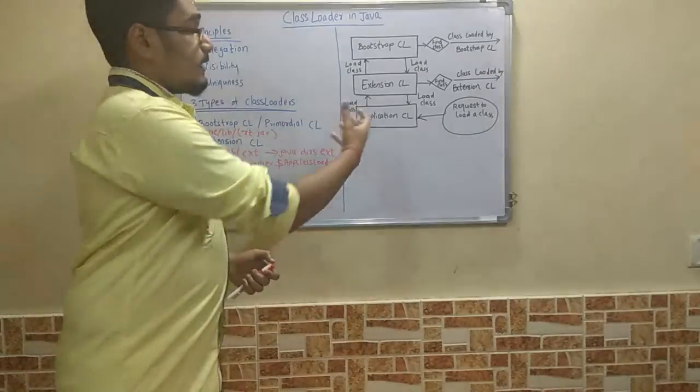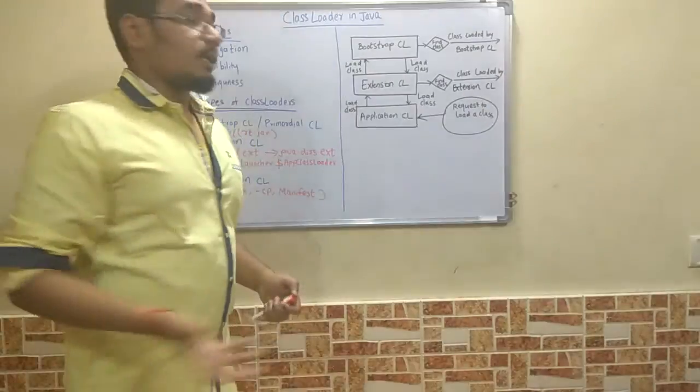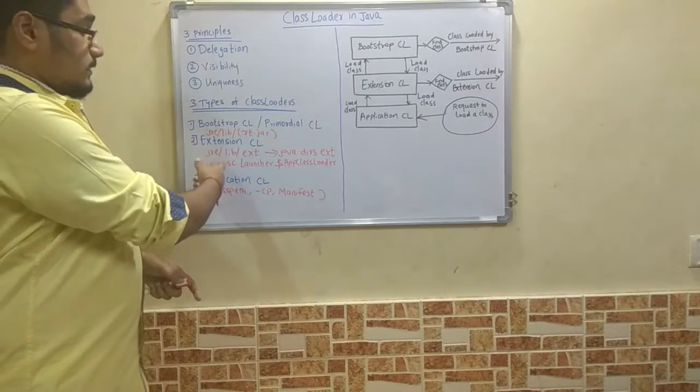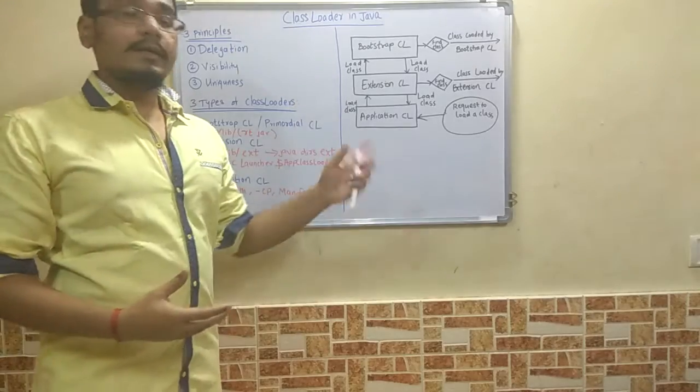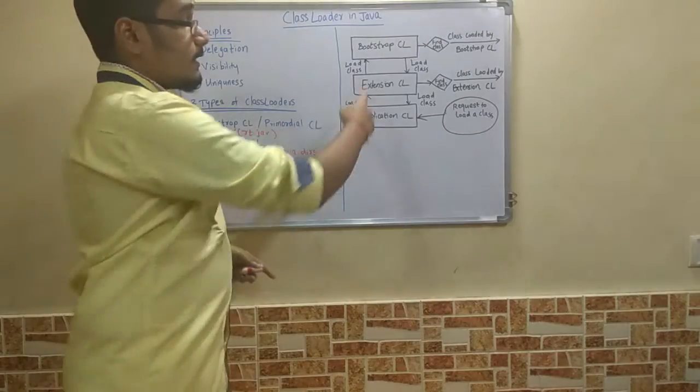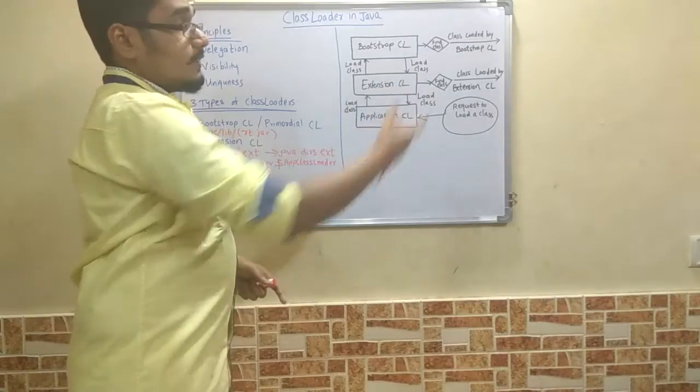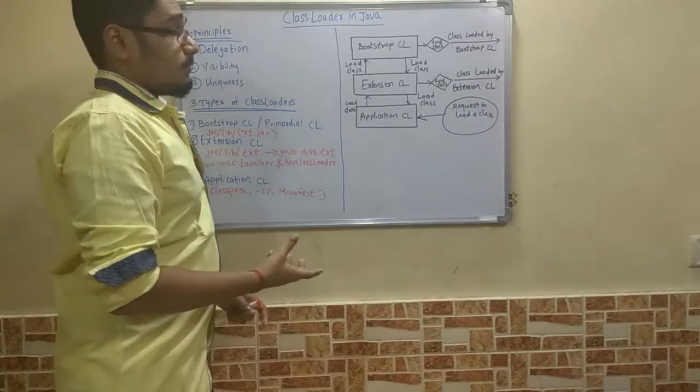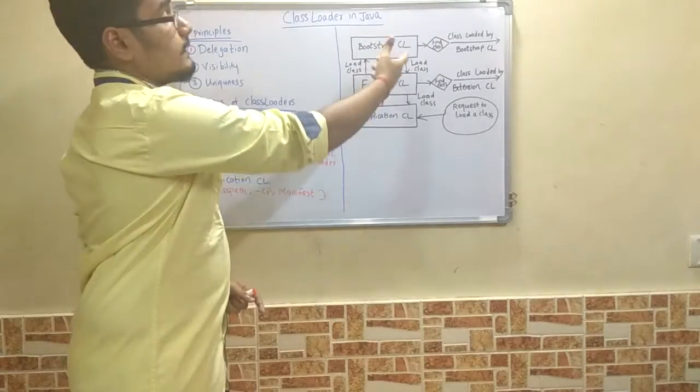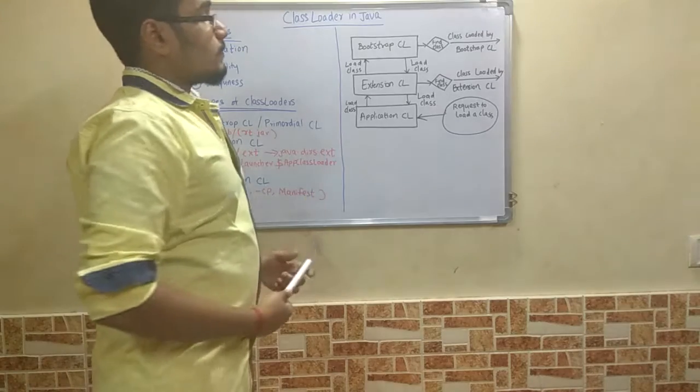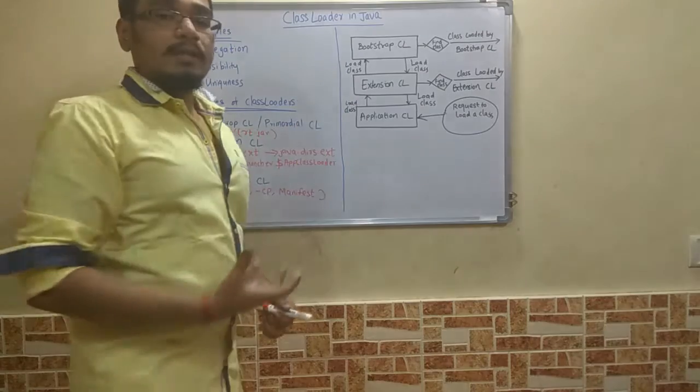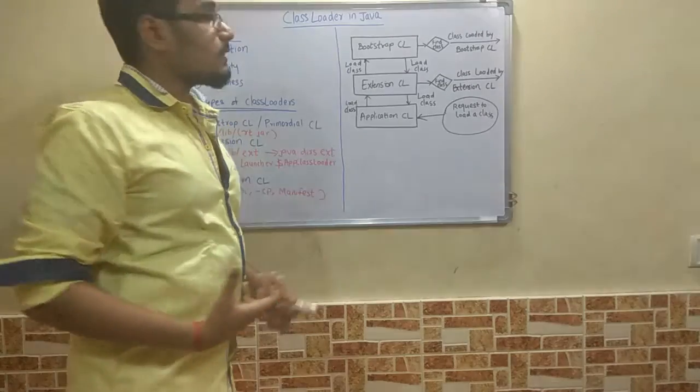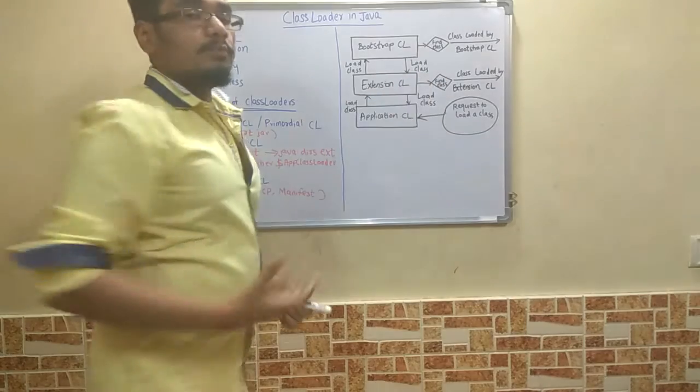If it is not there, it will load the class request to its parent class, that is the extension class loader. Extension class loader will go to its JRE lib extension directory. If it is not found by application class loader, it will find its class and it will be loaded by the extension class loader. If not by extension class loader, then it will go up to the parent directory, that is the bootstrap class loader. Bootstrap class loader will finally load the class from the rt.jar file, where all the compiled classes are stored.